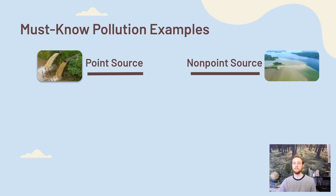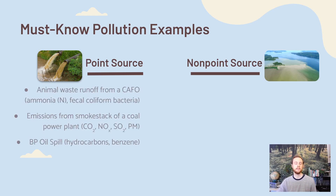Here are some specific examples of point source pollutants we should be familiar with. First is animal waste runoff — CAFOs are areas where we raise a lot of animals in concentrated areas and they produce a large amount of waste. That waste can be stored in manure lagoons, but if not properly managed, it may drain into local bodies of water. It contains specific pollutants such as ammonia, which is a nitrogen source and could lead to eutrophication, as well as fecal coliform bacteria, which can be really harmful to humans who might need to drink that water.